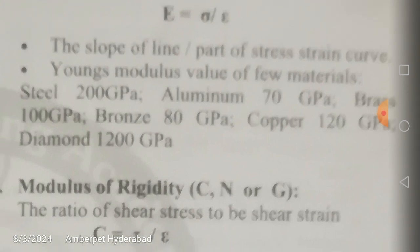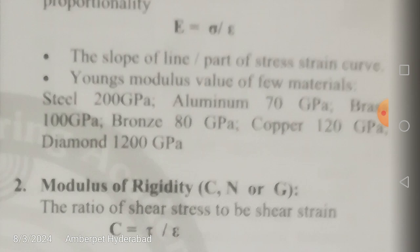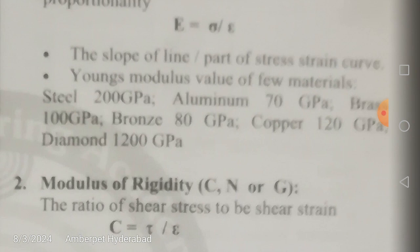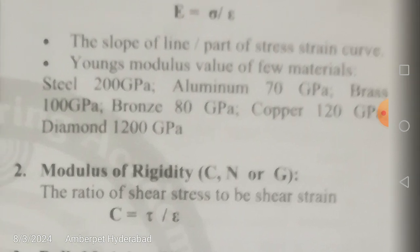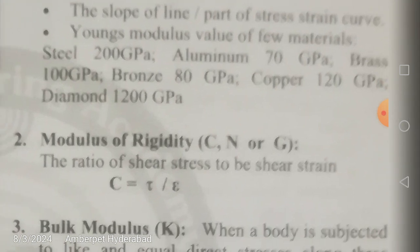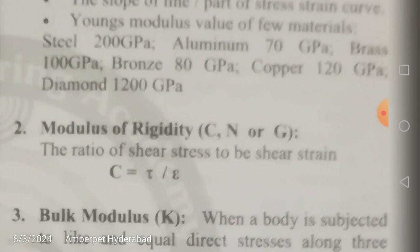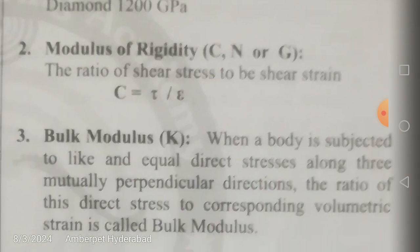Young's modulus values for certain materials — this is very important information. Steel: 200 GPa, aluminum: 70 GPa, brass: 100 GPa. Giga means 10 to the power 9, pascal means newton per meter square. Bronze: 80 GPa, copper: 120 GPa, diamond: 1200 GPa. You should note the increasing or decreasing order of these materials, as questions may be asked on that.